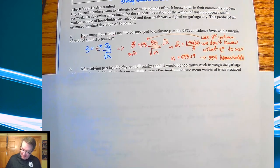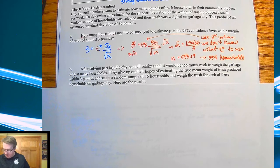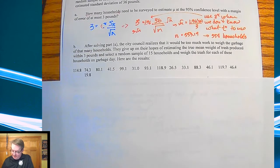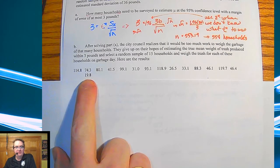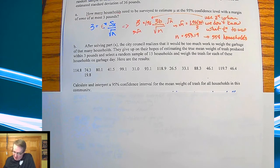For part B, after solving part A, the council members decided there'd be too much work to weigh all the garbage. So they give up hopes of estimating the true mean weight within three pounds, select a random sample of 15 households and just weigh the trash for each of those on garbage day. Here are the results. And for those of you who care, I am very sorry that the 19.8 bled over on the other side. It's very sad. Anyway, calculate and interpret a 95% confidence interval for the mean weight of trash for all households.